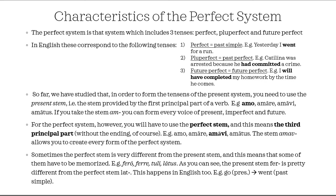For example, here is a verb we're going to study in the next class: ferro, ferre, tuli, latus. This verb is kind of irregular, and as you can see, the present stem 'fer' is pretty different from the perfect stem 'lat.' This is why it's important to memorize them. We have this thing in English too — for example, with the verb 'to go,' if you want to make the past simple you have 'went,' and so you can see that the stem changes.